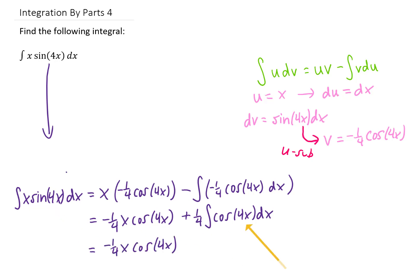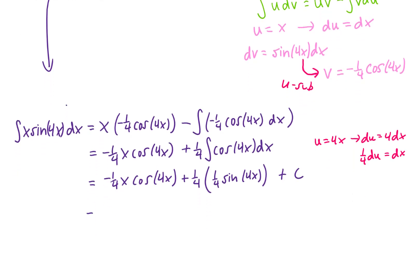This integral involves another pretty simple u substitution. It is just u equals 4x, which is going to bring a factor of 1 fourth out in front of our integral. And recognizing that the integral of cosine is positive sine, we get the following, which can be simplified just a little bit. Combining the 1 fourth and the 1 fourth gives us this answer right here, which looks really great.